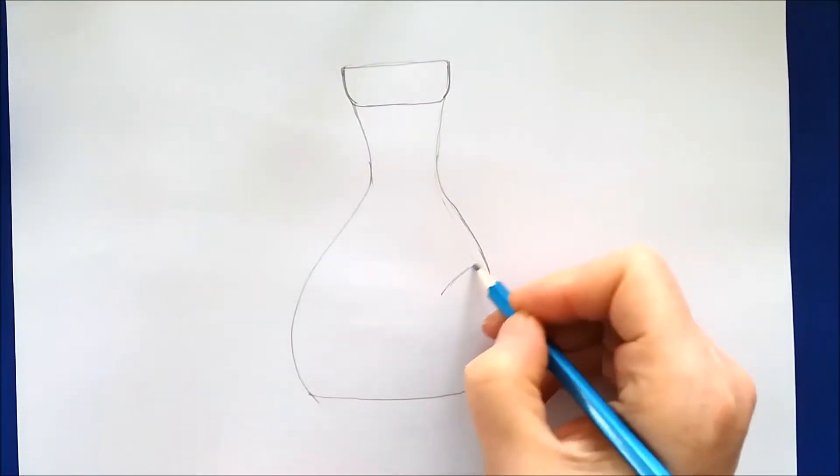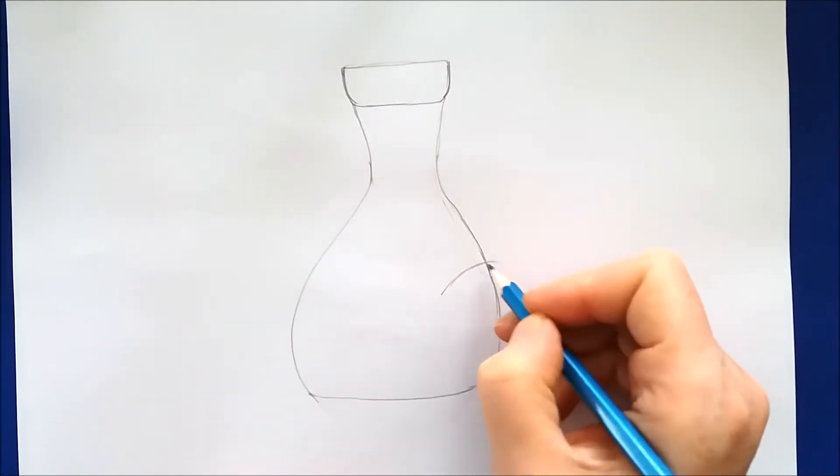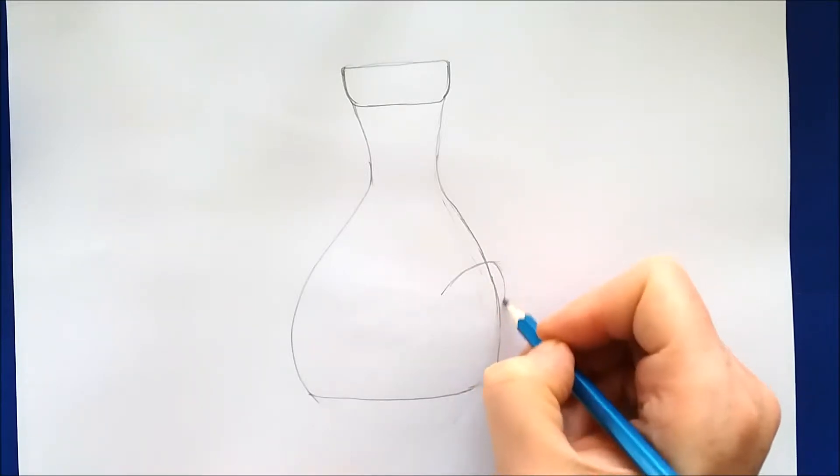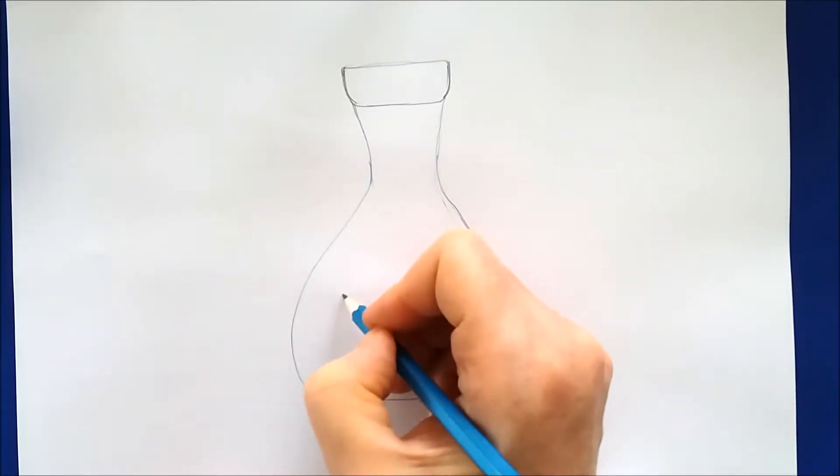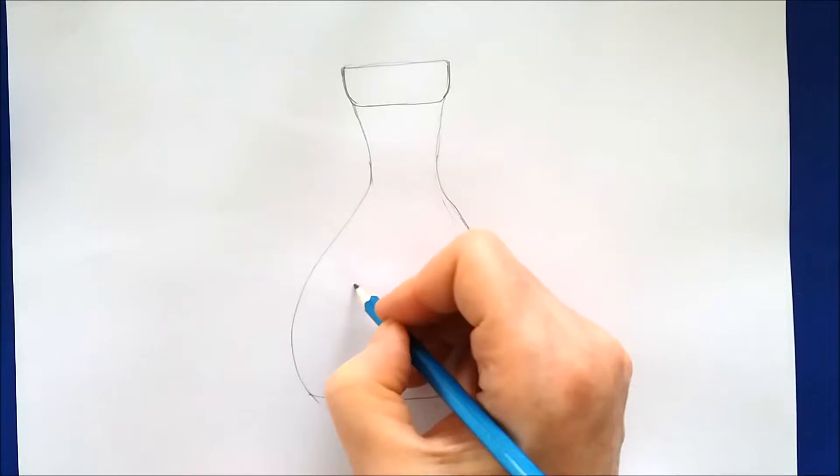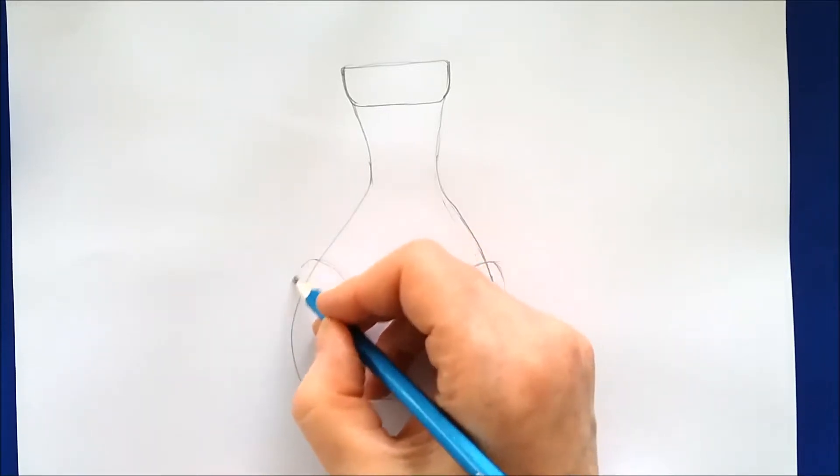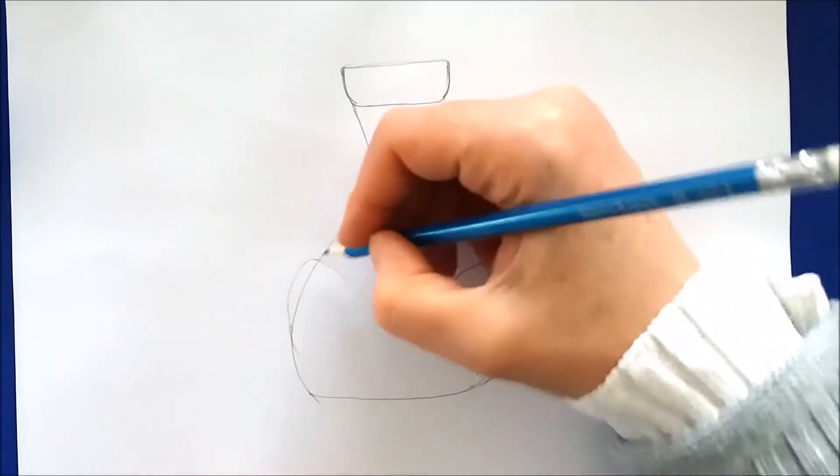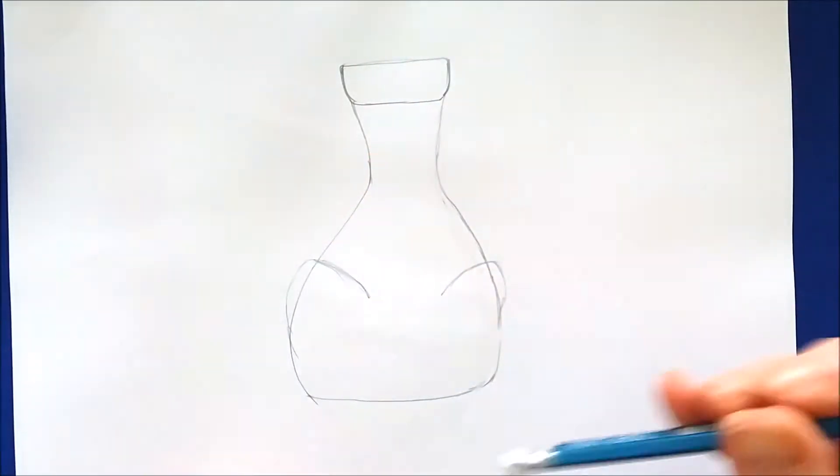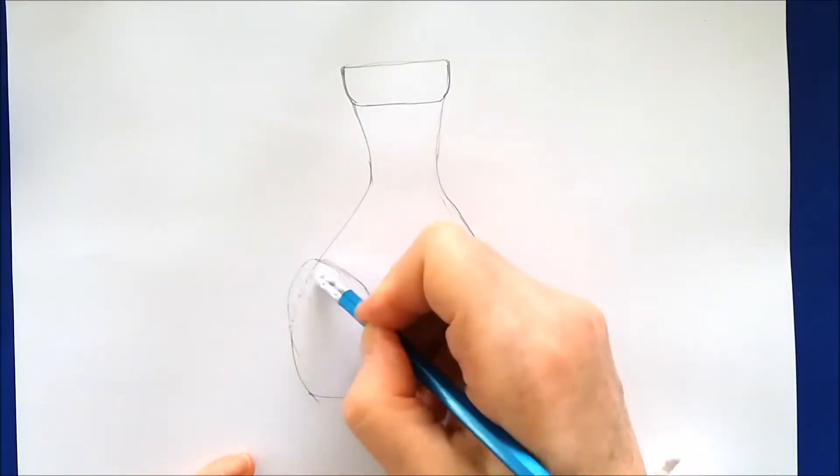The next thing we need to do is draw in some cheeks. I'm going to draw two U-shapes on either side of Bad Soy's bottle. This gives us the cheeks. And on top of the cheeks we will eventually draw the eyes.